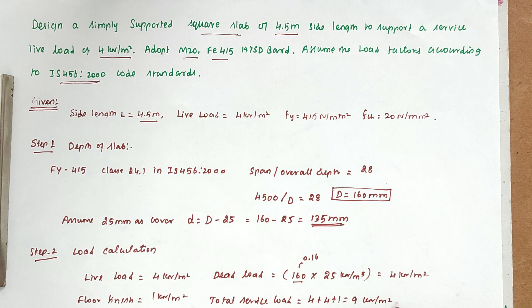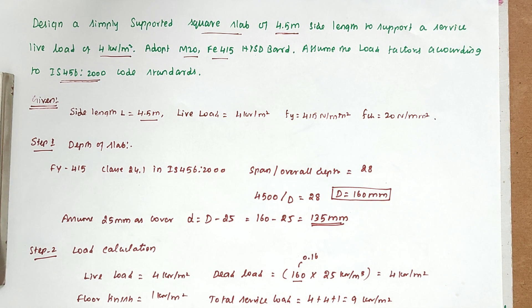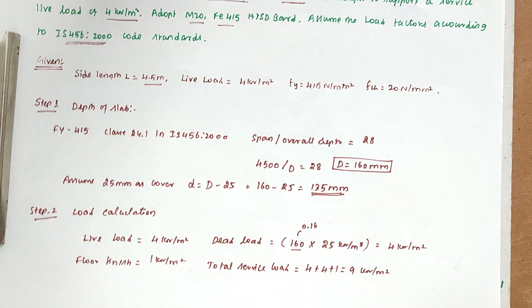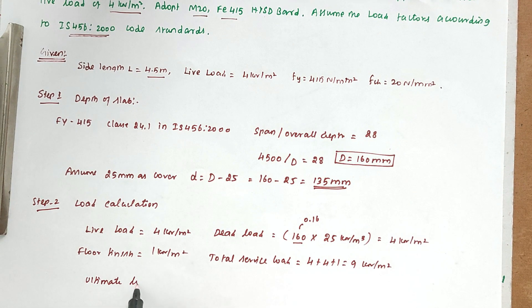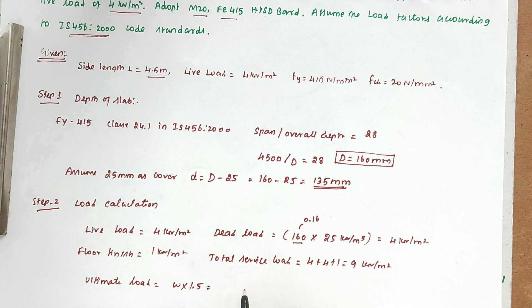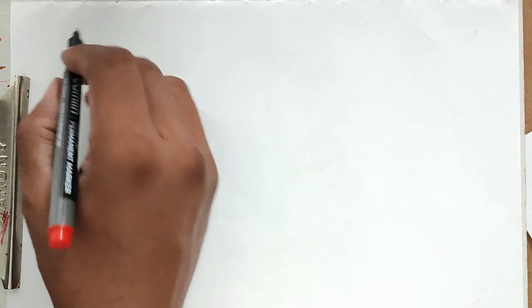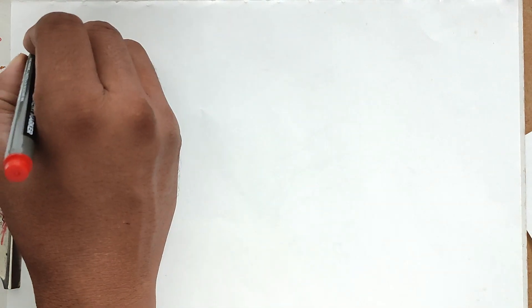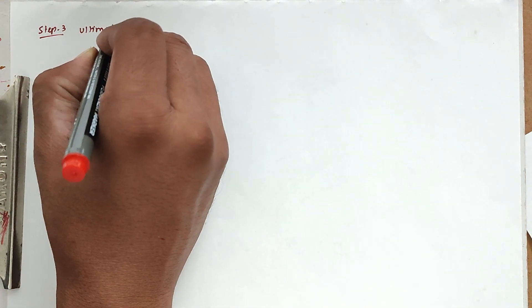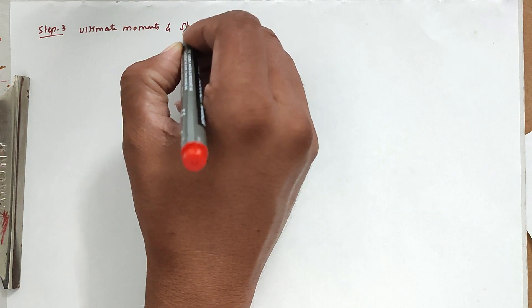Ultimate load = total service load × factor of safety = 9 × 1.5 = 13.5 kN/m². This is the final factored load.